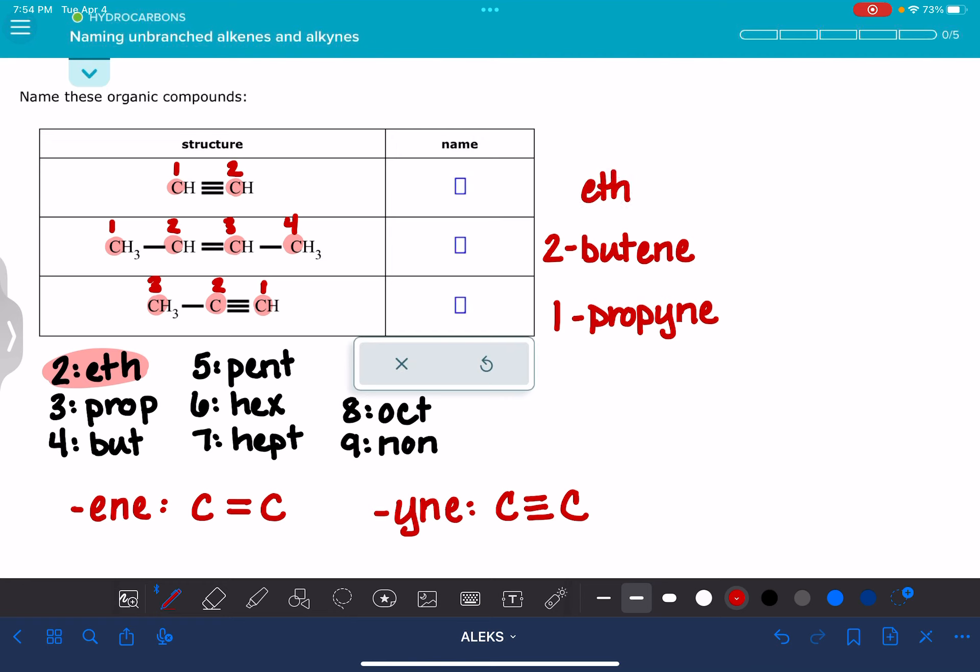Eth for two carbons, we're ending it with yne because it's a triple bond. And again, this is another example of a molecule where the one doesn't really need to be there. ALEKS doesn't care if it's there or not. You may know this molecule as just ethyne, but it is okay and understandable if you want to include the one.